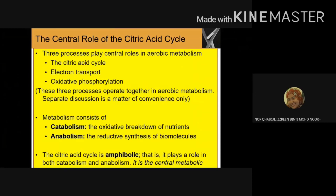The central role of the TCA cycle: three processes play a central role in aerobic metabolism. One is the TCA cycle, or citric acid cycle. Two is electron transport, and three is oxidative phosphorylation. These processes operate together in aerobic metabolism. In TCA cycle metabolism, we have both catabolism — the oxidative breakdown of nutrients — and anabolism — the reductive synthesis of biomolecules. So basically, the TCA cycle is amphibolic, playing both roles.